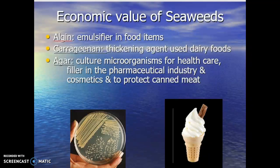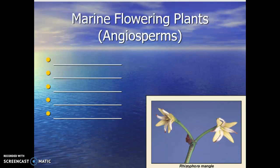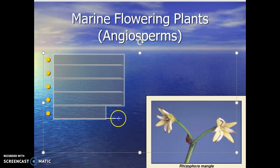Seaweeds are primary producers in the marine ecosystem. The second group for us to explore are the flowering plants — what we generally call the angiosperms. How do we classify something as a plant versus an algae? How do we separate algae from plants? Make sure you can differentiate — if you're looking at something and you think, is this an algae or is it a plant, what features do you want to look for?